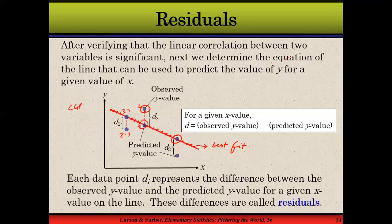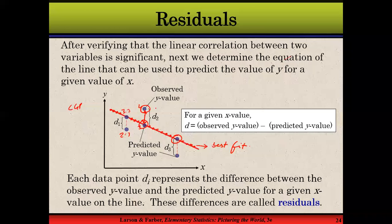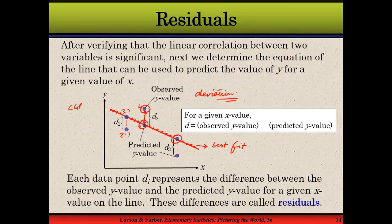If you see, there are differences from this line to these data values. This is the distance. This is the distance. This is the distance. This is the deviation. So this is the deviation.